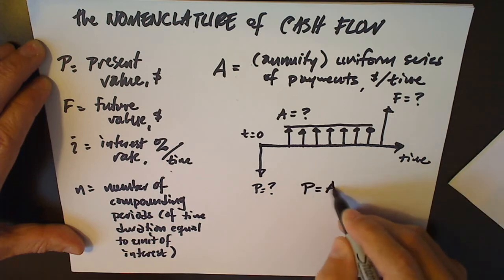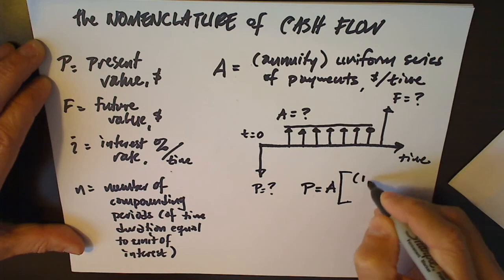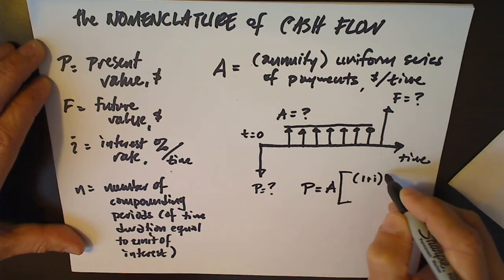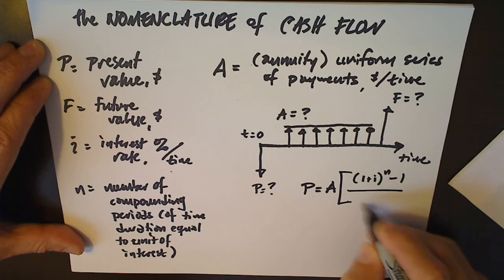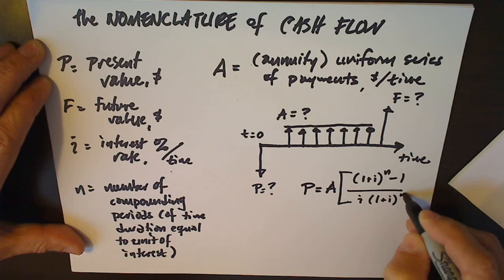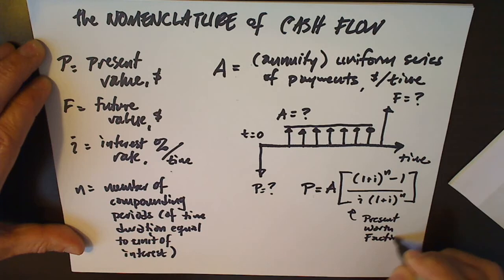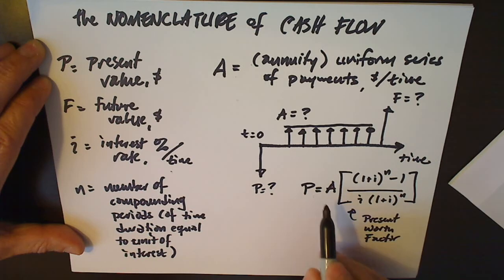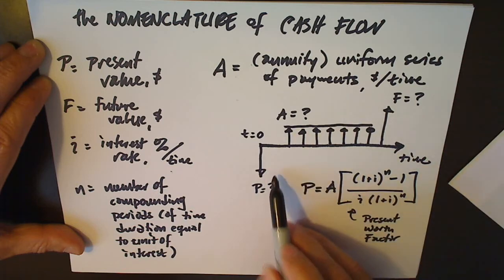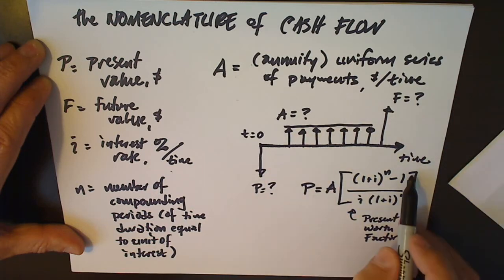P equals A, the quantity 1 plus i raised to the n minus 1 over i, 1 plus i to the n. In brackets, we have a term called the present worth factor in this equation. That is, P and A are whatever these amounts are labeled. Then we have this more complicated equation using the interest rate and the number of compounding periods